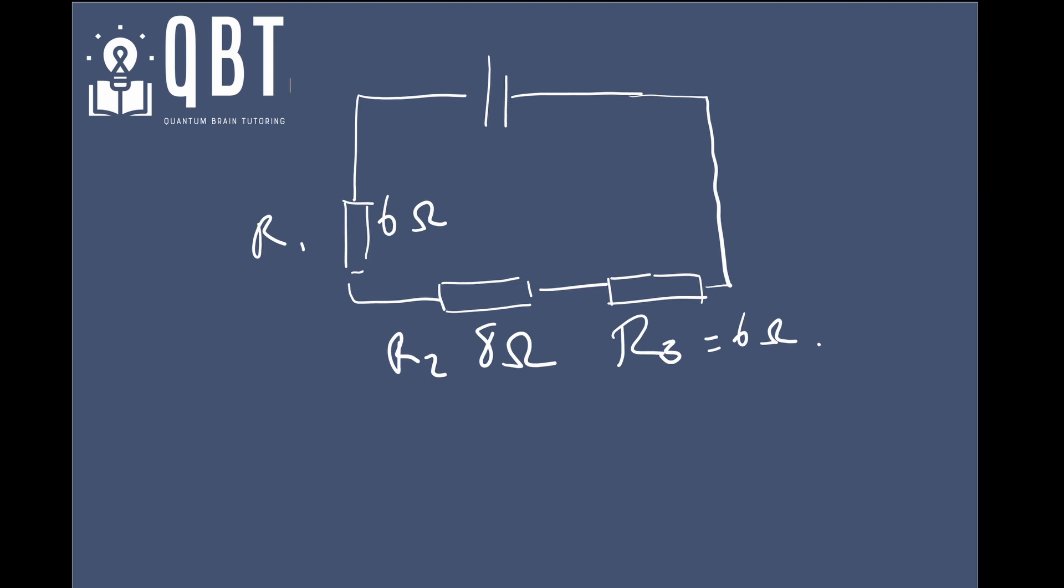then we just take our values, right? We take our resistance values and we put them into our equation, which is RT is equal to R1 plus R2 plus R3 and so forth. So we get 6 plus 8 plus 6, right? Which gives us a total of 20 ohms.